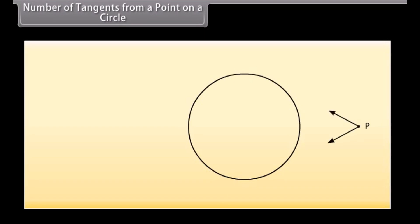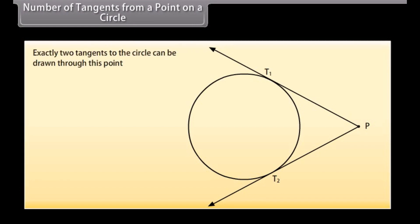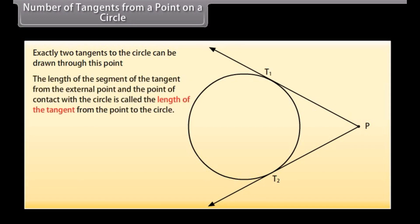Finally, take a point P outside the circle and try to draw tangents to the circle from this point. We can find that exactly two tangents to the circle can be drawn through this point. The length of the segment of the tangent from the external point to the point of contact with the circle is called the length of the tangent from the point to the circle. Here PT1 and PT2 are the lengths of the tangents from P to the circle, and they have a common property which we will learn in the next screen.